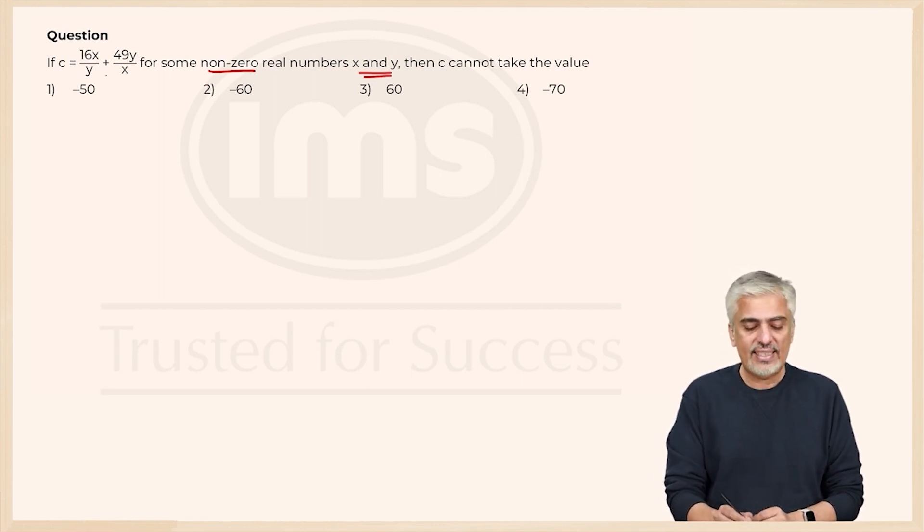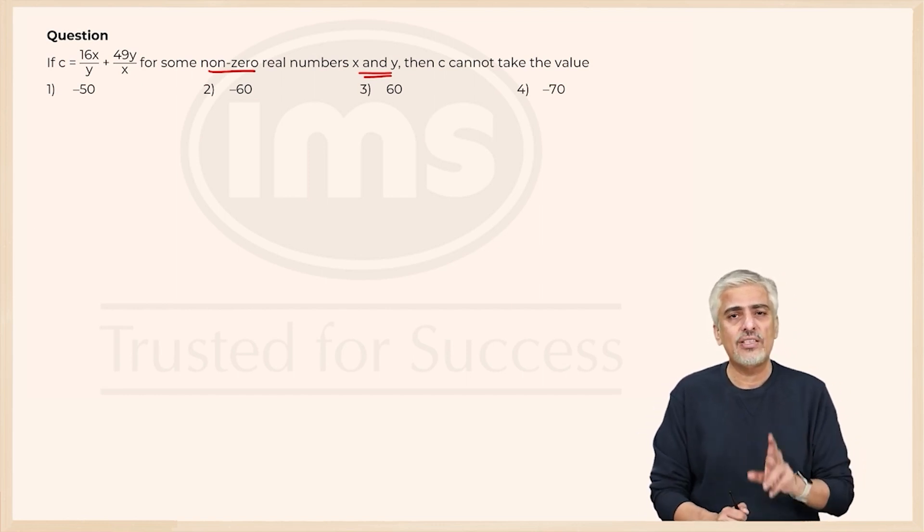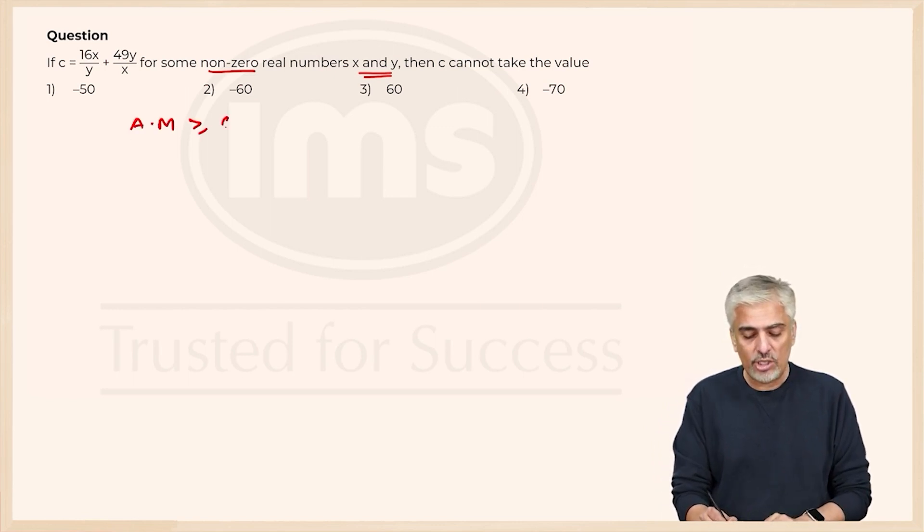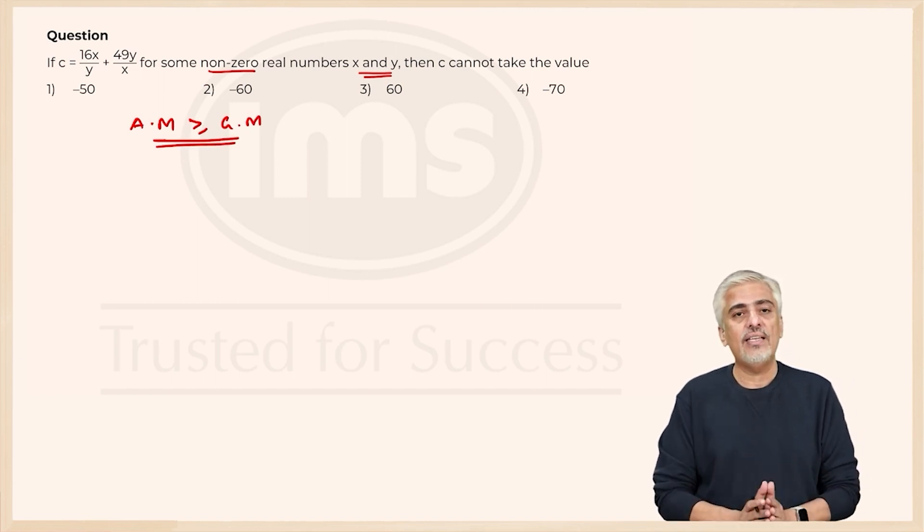If you look at the terms 16x upon y and 49y upon x, 16 is a perfect square and 49 is a perfect square. From there I got my hint that arithmetic mean has to be greater than or equal to geometric mean is the rule I will use to find the range for a plus b, where I'm calling 16x upon y as a and 49y upon x as b.